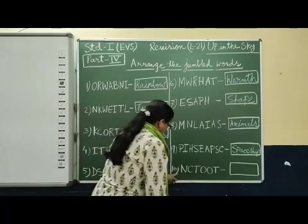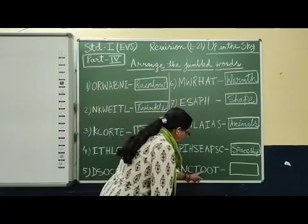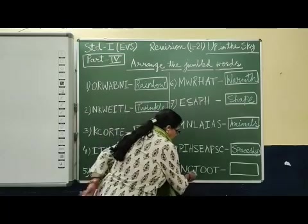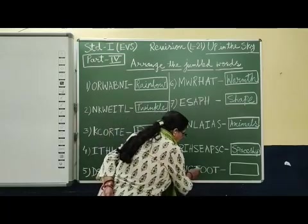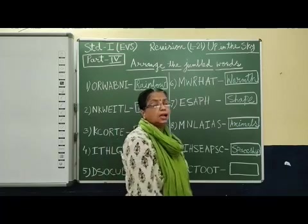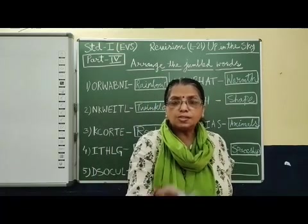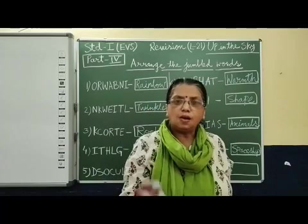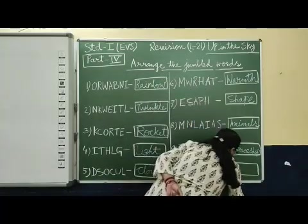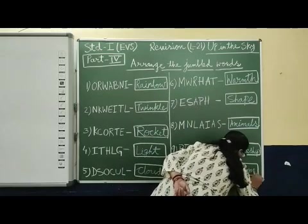Now, last one: N, C, T, O, O, T. C, O, T, T, O, N — Cotton. Clouds float in the sky and it looks like a ball of cotton. So: C, O, T, T, O, N — Cotton.